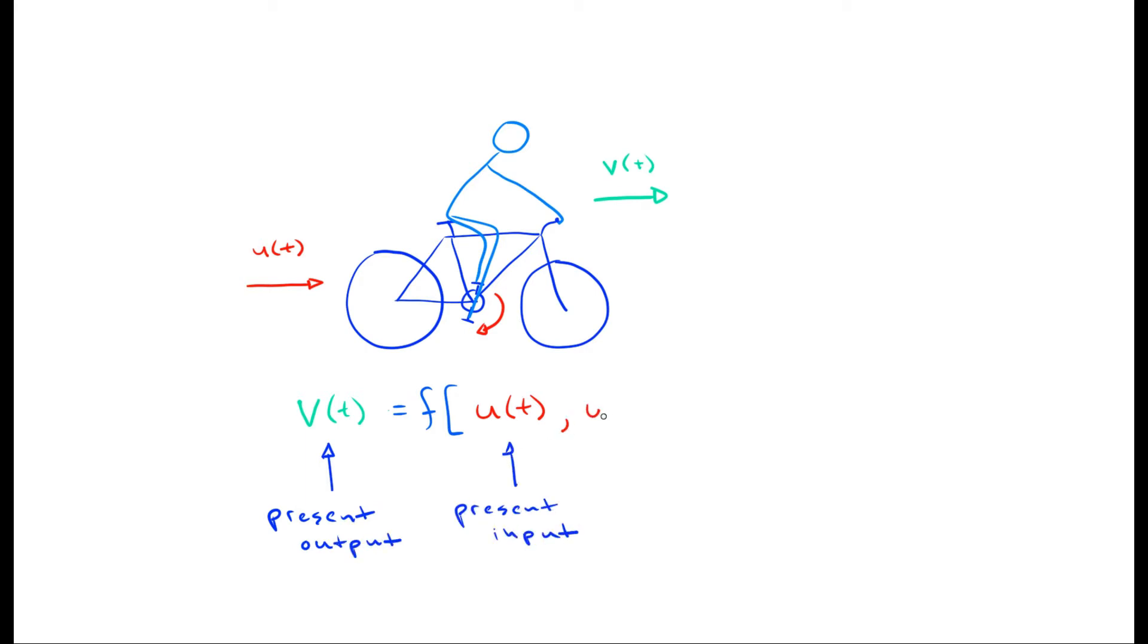However, we also know that we might have some residual velocity left over from pedaling some time ago. In other words, the present velocity might also be a function of past inputs. This dependency of the output on present and past inputs is what makes this a dynamic system.